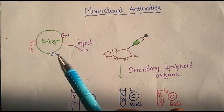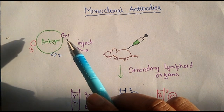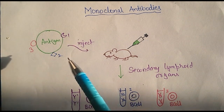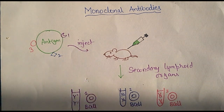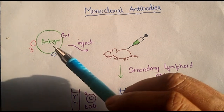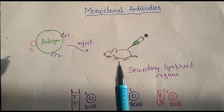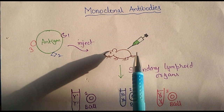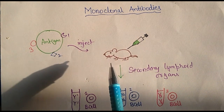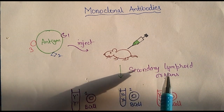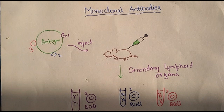This is an antigen and there are three epitopes: 1, 2, and 3. So there are three epitopes — it's a multi-epitopic antigen. If you want to know what an epitope is, we have included the link in the i button. We have a multi-epitopic antigen and we then inject this antigen into the mice. This antigen goes inside the mice and will be going to the secondary lymphoid organs like the spleen.